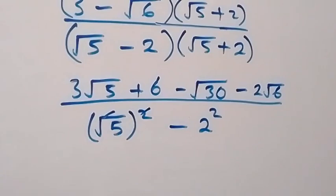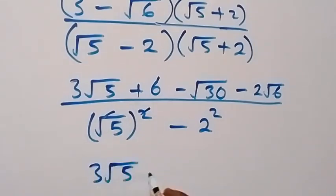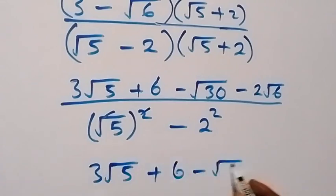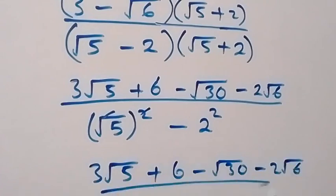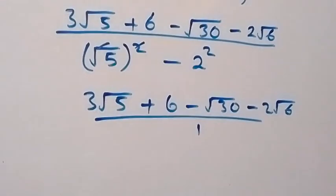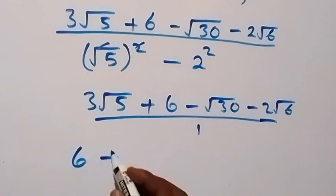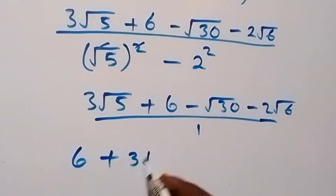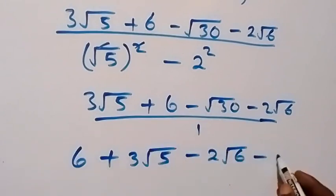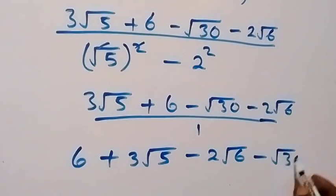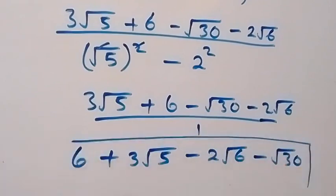5 minus 4 is 1, so we have this now as 3 root 5 plus 6 minus root 30 minus 2 root 6, over 1. Therefore, rearranging, the final answer is 6 plus 3 root 5 minus 2 root 6 minus root 30. And there we have the solution to the given problem.